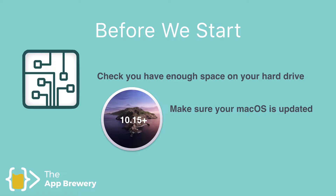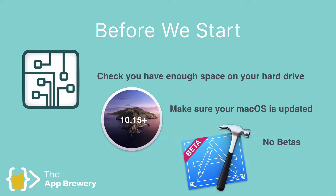Once you've done those two things, the last thing to make sure of is that you don't download a beta version of Xcode. It's actually not that easy to download it by accident, so as long as you follow along with this video, you'll be downloading the official release version. The reason we don't want students working with betas is because beta software is meant for testing — it can contain bugs and might end up giving you more headaches than it's worth. So no betas: stick with what we're going to do and you'll have a much better experience developing for iOS.